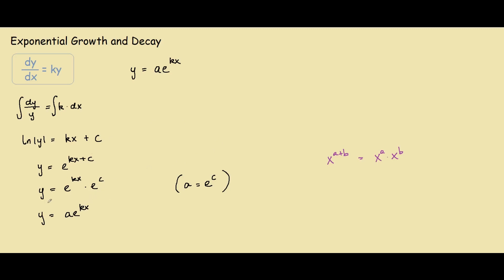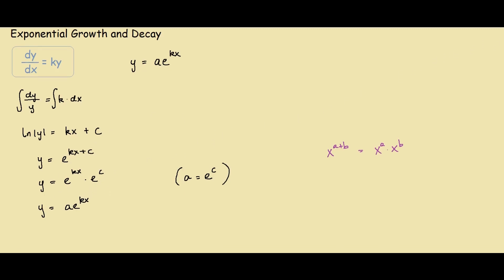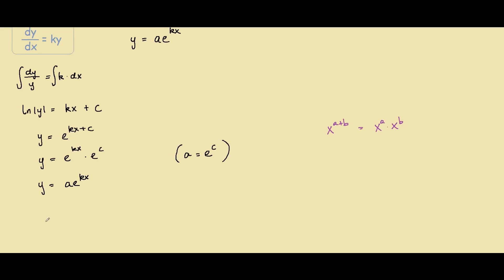So if we were to call our y the population, p equals ae to the k with respect to time. So say we wanted to find the population with respect to time.